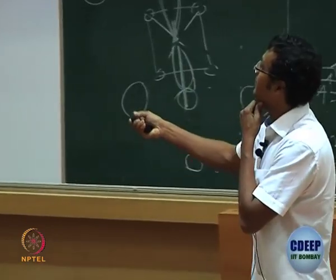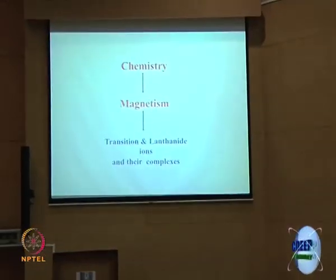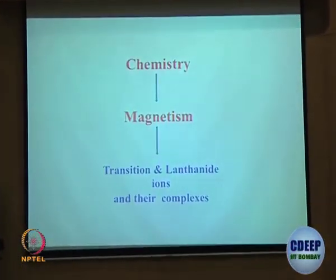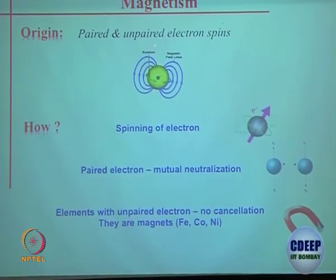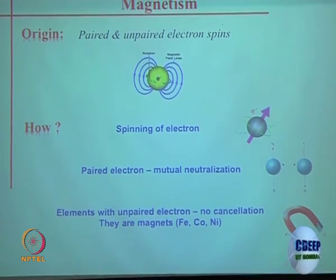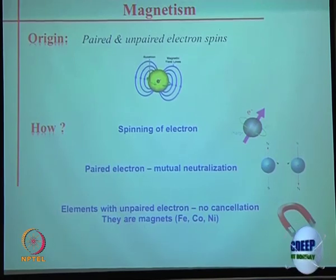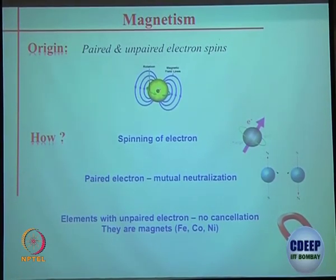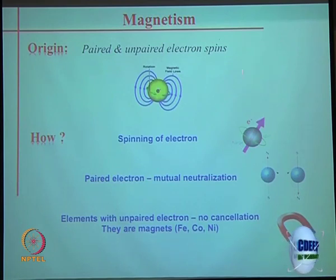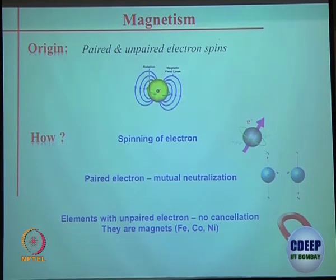We will discuss the magnetism of metal complexes and then get into lanthanides specifically, and then stop. Unpaired electron pairs are the ones giving magnetic behavior because paired electrons cancel each other out. Spinning of an unpaired electron gives you the magnetic behavior; paired electrons cancel each other out.